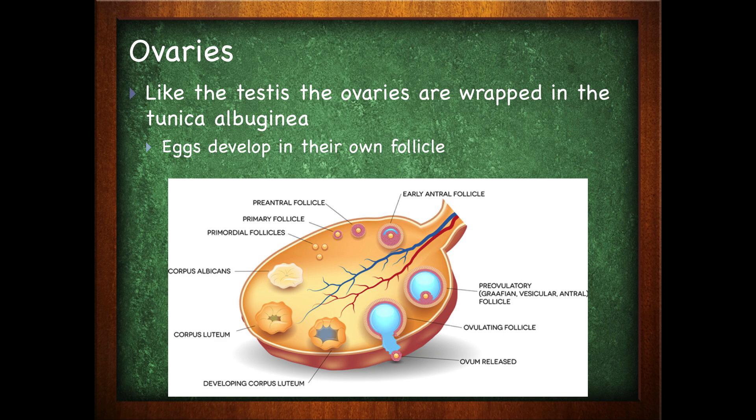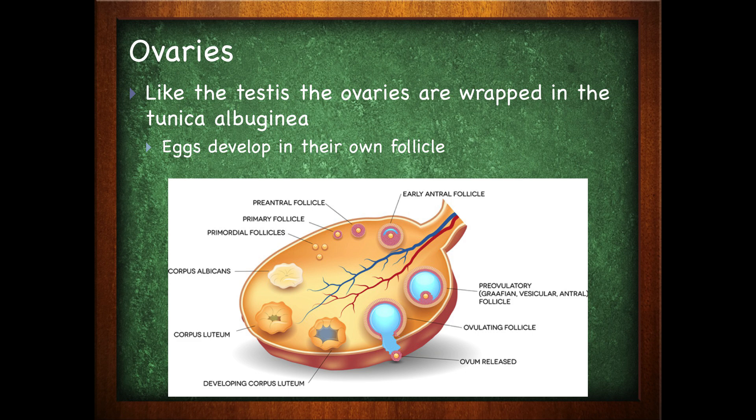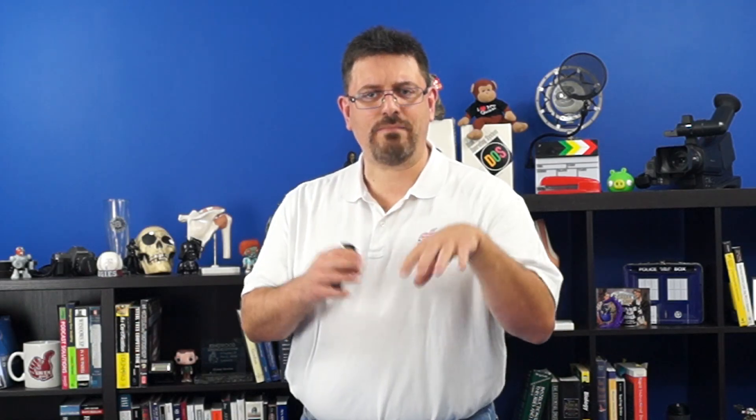The ovaries, like the testes, are wrapped in the tunica albuginea, which is a supportive structure that encases and wraps the ovaries. Eggs within the ovaries develop in their own follicles. Think of follicles as bubbles — a bubble space where the egg will develop — and you have all these follicles, all these little bubbles, within the ovary.